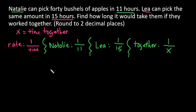So what we would do is you're always going to take the part of the first person plus the part of the second person equals the part together. So we would do 1 over 11 plus 1 over 15 equals 1 over x.